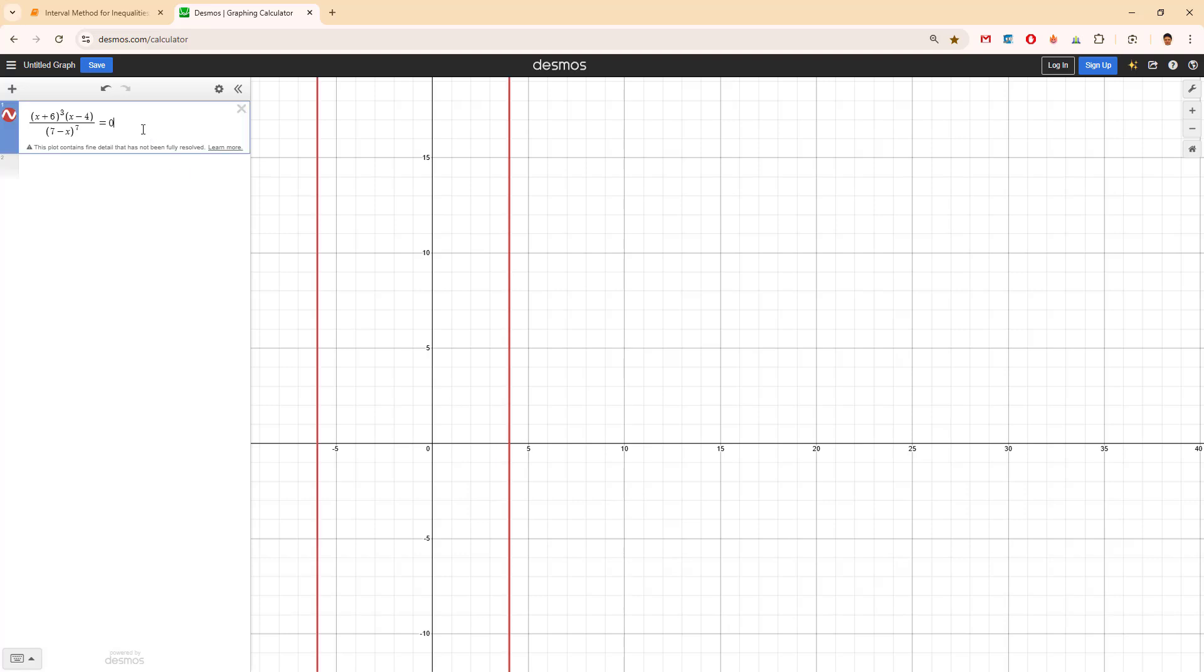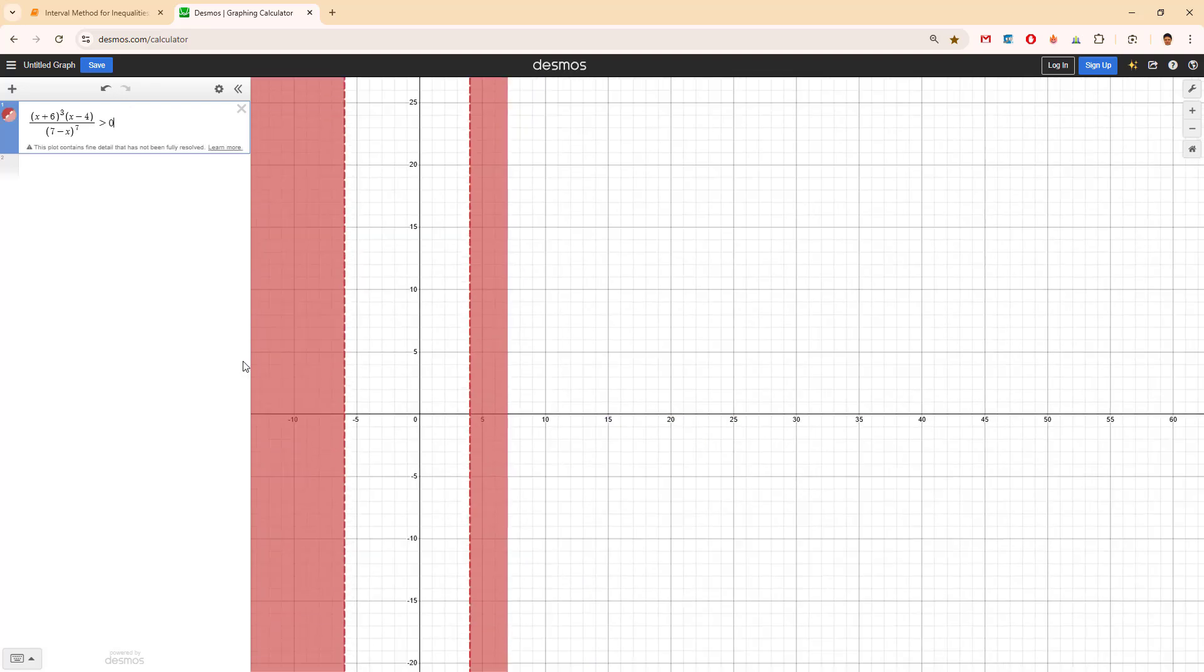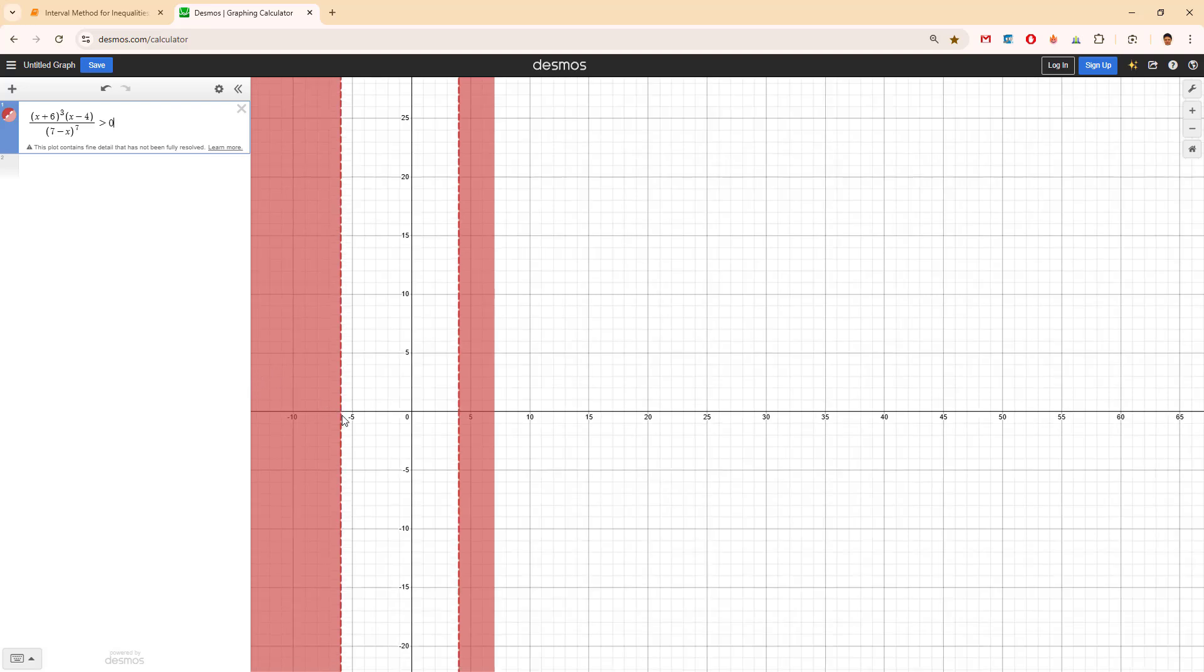And if we write our original function, which was bigger than 0, we would see from minus infinity to 6. And it's obviously not including 6 because of the line.